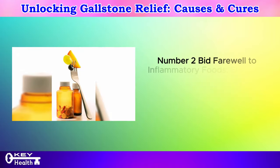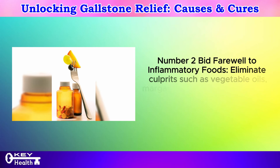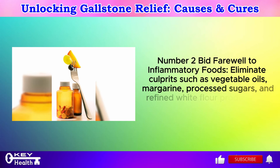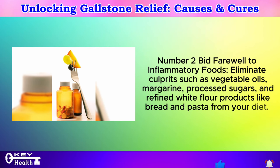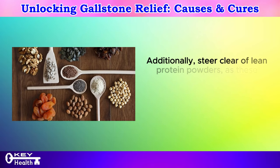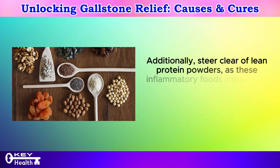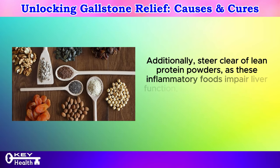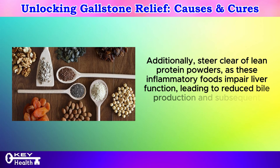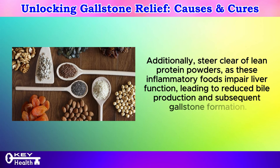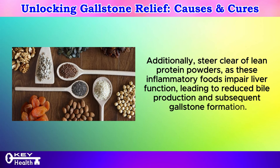Number 2: Bid farewell to inflammatory foods. Eliminate culprits such as vegetable oils, margarine, processed sugars, and refined white flour products like bread and pasta from your diet. Additionally, steer clear of lean protein powders, as these inflammatory foods impair liver function, leading to reduced bile production and subsequent gallstone formation.